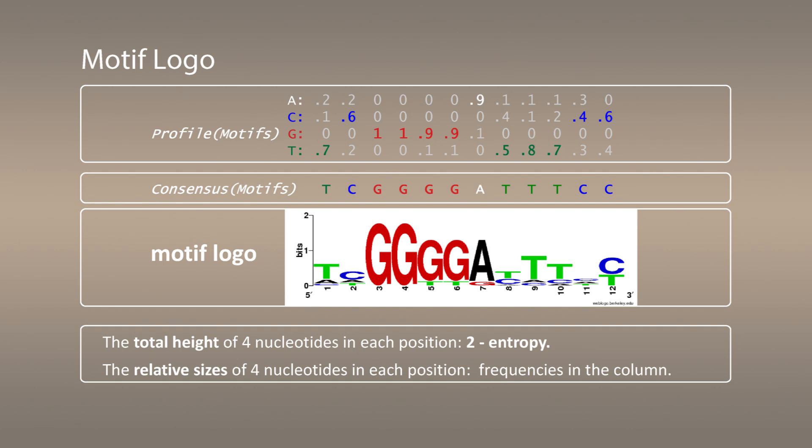And now the moment of truth. Let's see how the algorithms that we developed work and whether the motifs that we find are close to the biological one. Here is the motif logo of the dormancy survival regulator site. Motif logo is constructed in such a way that the total height of four nucleotides in the motif logo corresponds to 2 minus entropy. So for a completely conserved column like nucleotide G in this motif, we will have height 2.